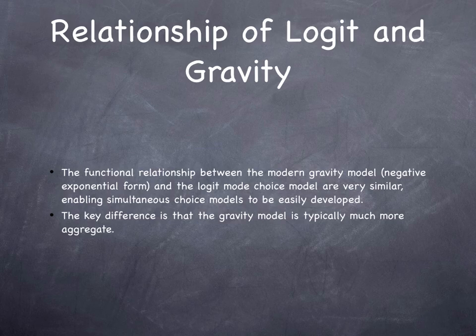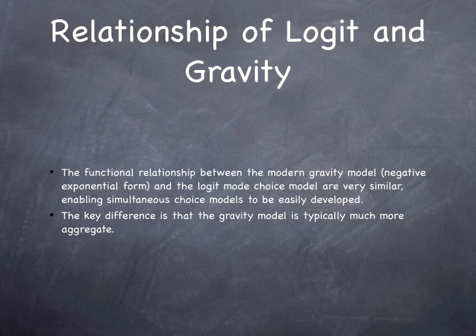It turns out that the functional relationship between the modern gravity model and its negative exponential form and the logit model are very similar. They enable simultaneous choice models to be easily developed. The key difference is that the gravity model is much more aggregate.